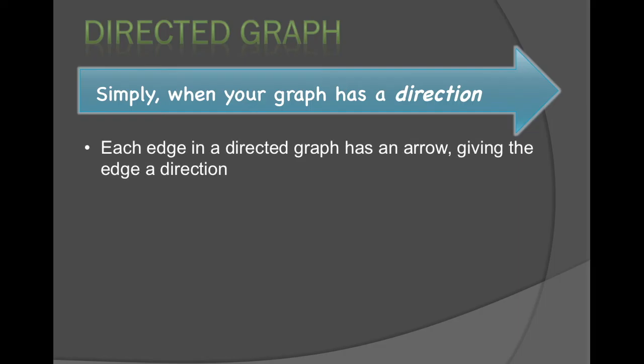Each edge in a directed graph has an arrow, giving the edge some direction. These kinds of edges with an arrow are called arcs.